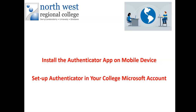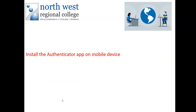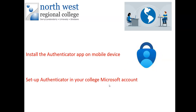There are two things you need to do. First, you have to install the Authenticator app on the mobile device you're using — that's your phone or your tablet. Secondly, you need to go into your college Microsoft account and set up Authenticator on that account. You get the Authenticator app from the Google Play Store or the Apple Store, recognisable by its icon.